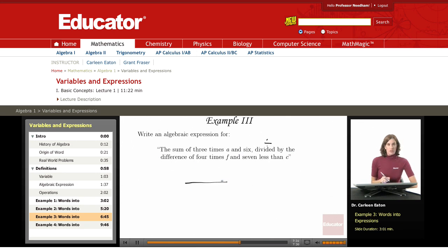I'm going to write a fraction bar. In the numerator, I'll have the sum of three times a and six. Sum tells me to add, so up here in the numerator I'm going to be adding. What I'm adding is three times a and six.